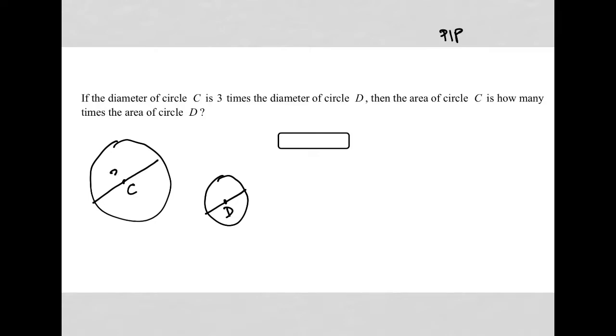So I could just say the diameter here is like 3x, whereas the diameter here is x. After the comma in the sentence, we have then the area of circle C. How do you find the area, first of all?